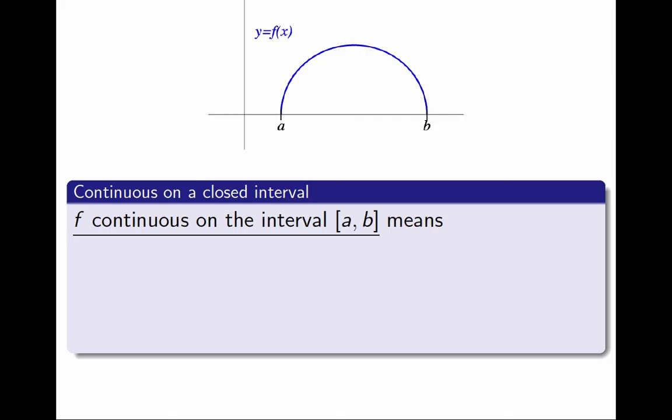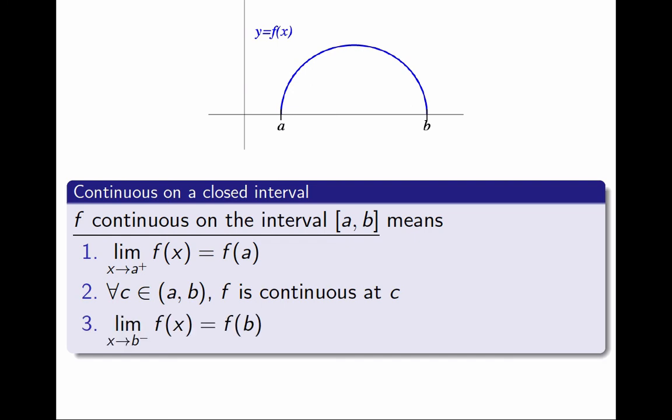So instead, I will require the following. At all the points in the interior of the interval, I require the function to be continuous. At the left endpoint a, I only need the right-side limit of f to be equal to f(a). And similarly, at the right endpoint b, I only need the left-side limit of f to be equal to f(b). And that's it.